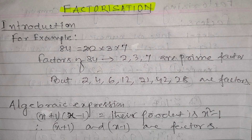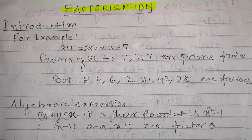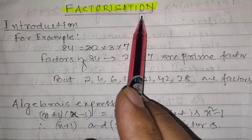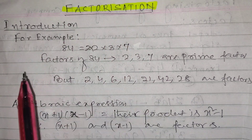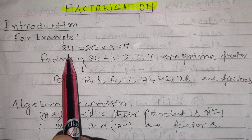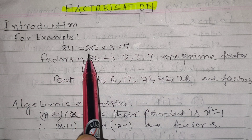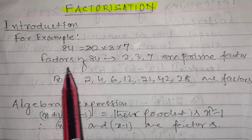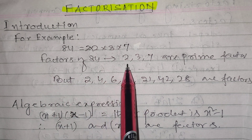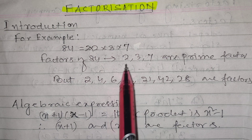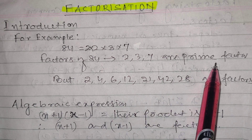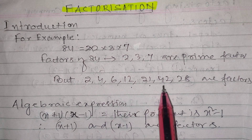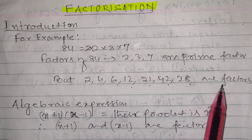Hello students. Today I want to teach the topic of factorization. For introduction, let us take one example: 84 = 2 × 2 × 3 × 7. The prime factors are 2, 3, and 7. The composite factors are 2, 4, 6, 12, 21, 28, and 42.